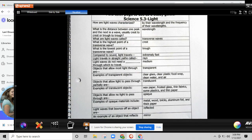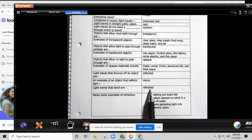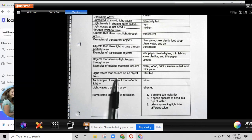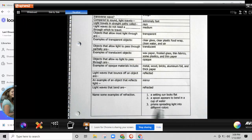Light waves that bend are refracted. Name some examples of refraction: a setting sun looks flat, a spoon appears to bend in a cup of water, prisms spreading light into different colors.